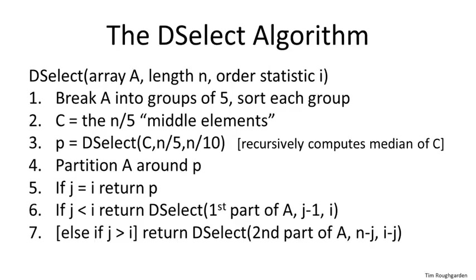We take those n/5 first-round winners — the middle element of each sorted group — and copy them into a new array C of length n/5. Then we run the second round of our tournament, electing the median of these n/5 first-round winners as our final pivot. We do that by recursively calling deselect on C for the n/10-th order statistic. Then we partition A around the pivot and recurse on the appropriate side.